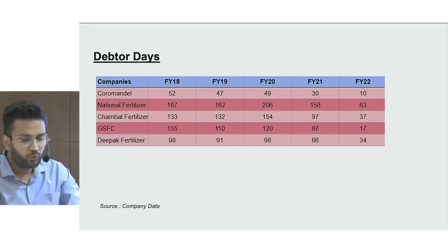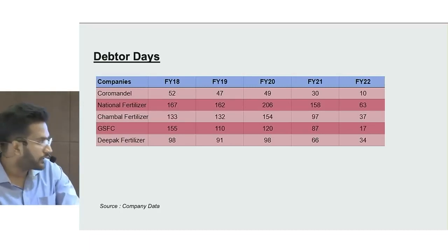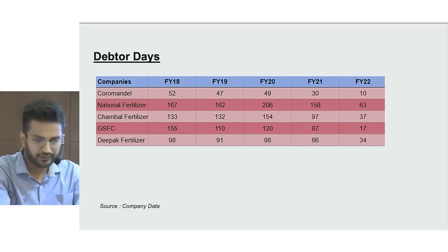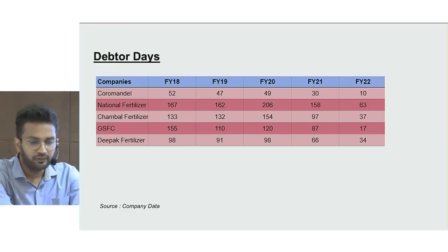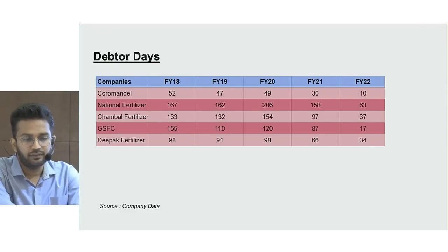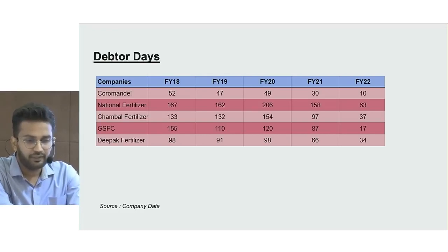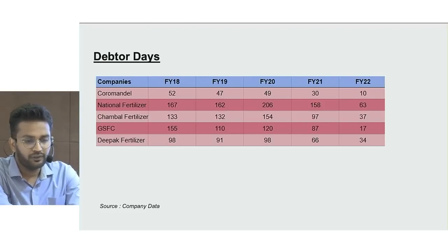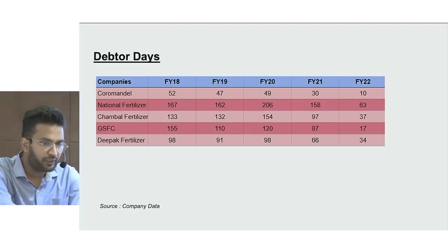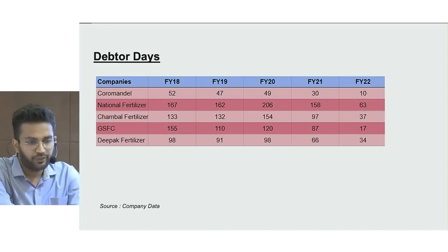A core concern for the fertilizer segment is the delay in receiving subsidies from the government. Urea companies like RCF, National Fertilizers and GSFC, which are PSU companies, have received subsidy debtor days piling up to 6 months because subsidy contribution forms a large share of their overall realization. In case of Coromandel and UPL, debtor days have reduced from 50 to almost 10 days now.